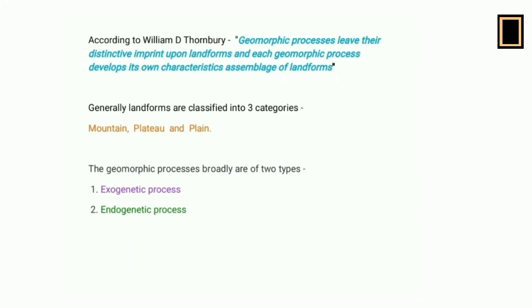Now the general classification of landforms: there are three types — mountains, plateaus, and plains. These are also classified further, but before going into detail about such classification, we have to concentrate on the geomorphic processes.